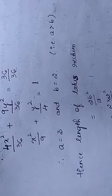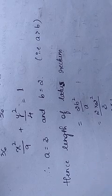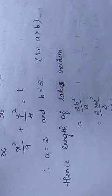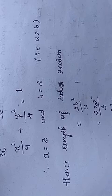Comparing with the general equation, we get a² = 9 and b² = 4, so a = 3 and b = 2. Since a > b (3 > 2), the length of the latus rectum is 2b²/a = 2 × 4 / 3 = 8/3. So the length of the latus rectum is 8/3.